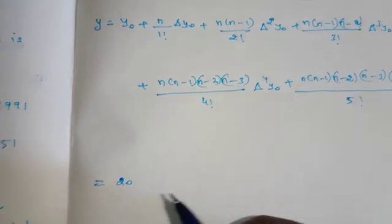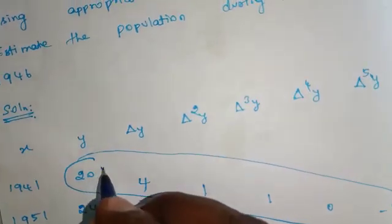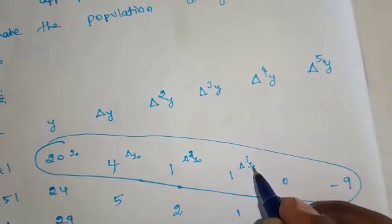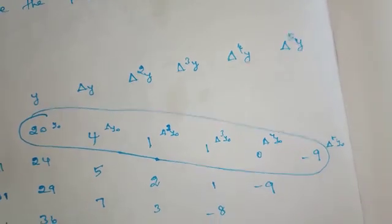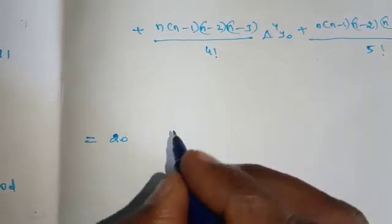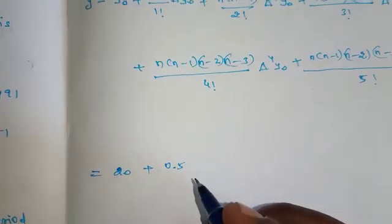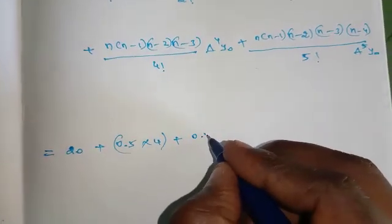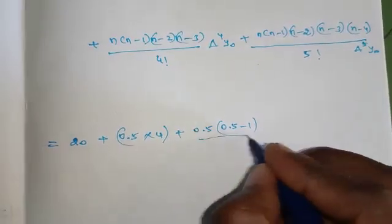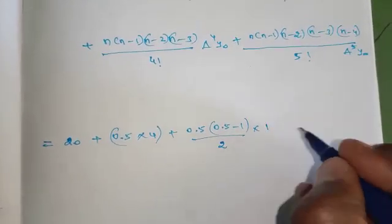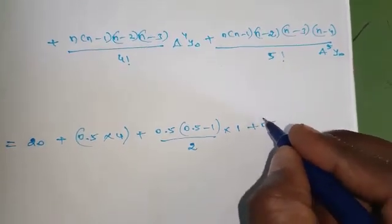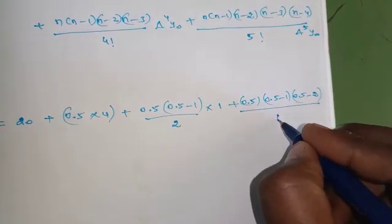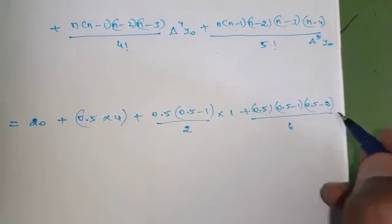y₀ value = 20. Substituting: plus n = 0.5; then 0.5(0.5 minus 1) divided by 2! = 2, into Δ²y₀ = 1; plus 0.5 × (0.5 minus 1)(0.5 minus 2) divided by 3! = 6, into Δ³y₀ = 1.